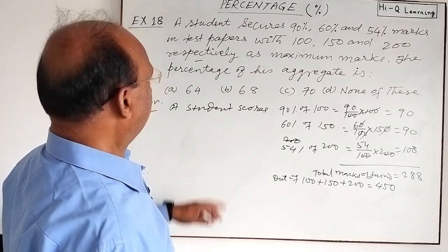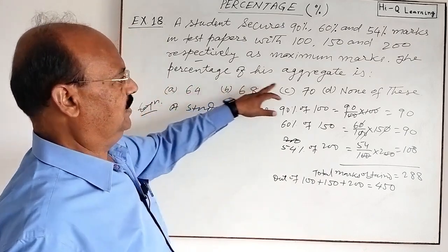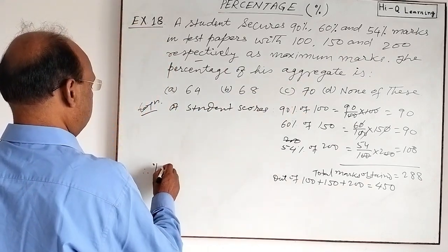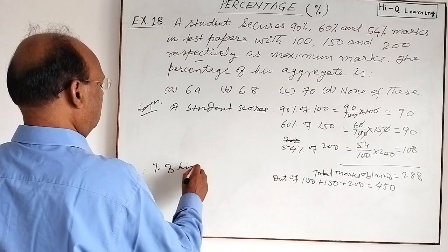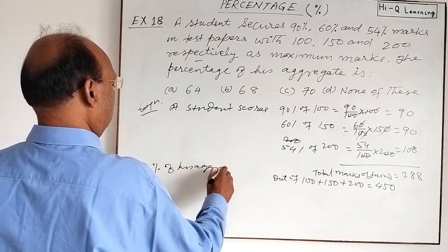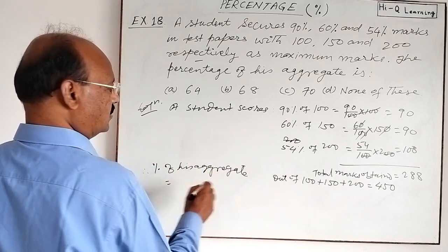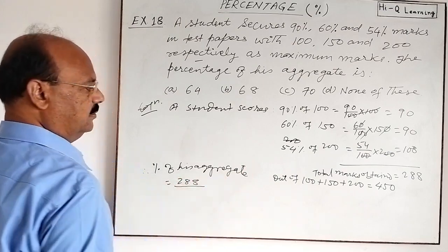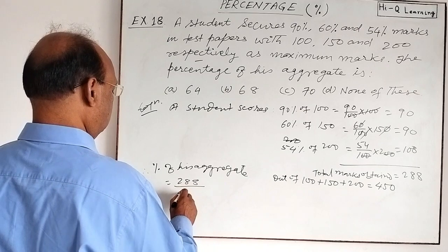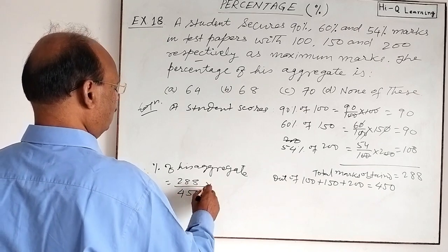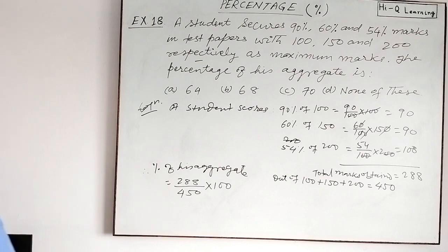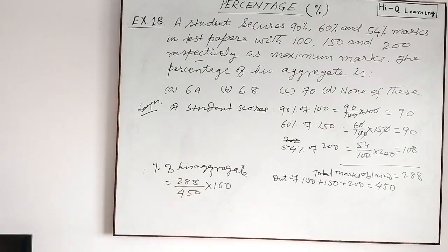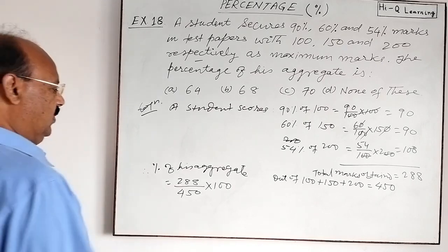So therefore, we need to find the percentage of this aggregate. So percentage of this aggregate will be total marks obtained, 288, divided by maximum marks, that is 450, and into 100. After calculating it, we will get the answer very easily. So let us simplify it.